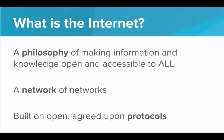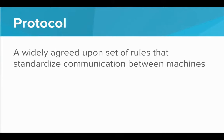At a physical level, the Internet is a network connecting networks. It spans across the entire globe and connects individual networks of computers so that any two computers on the globe can communicate with each other. It's only able to work this way because it is built on open and agreed-upon protocols. A protocol is a widely agreed-upon set of rules that standardizes communication between machines.